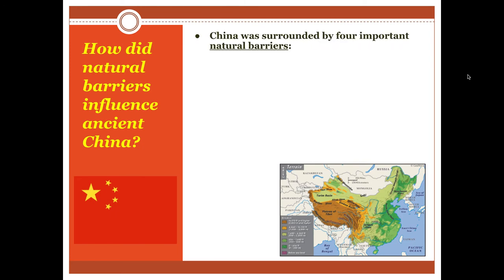China was surrounded by four important natural barriers. These barriers were extremely important in understanding how geography affected China. The first of these barriers was the Pacific Ocean, which is the largest body of water on the face of the earth. Because it's so large, it makes it very difficult for people on the other side of that ocean to get to China.